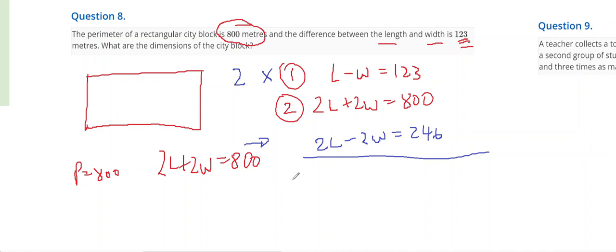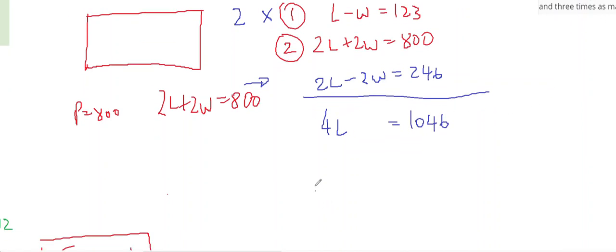And now I'm going to add them together. So 4L, the W's disappear, equals 1046, and L is going to be 1046 divided by 4. 4 goes into 10 twice, 8 with 2 remainder, 4 goes into 24 six times, 4 goes into 6 once with 2 remainder, and that's going to be a half.